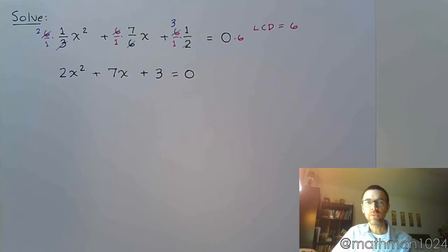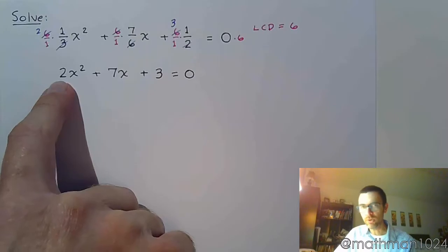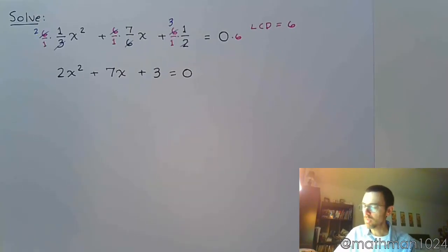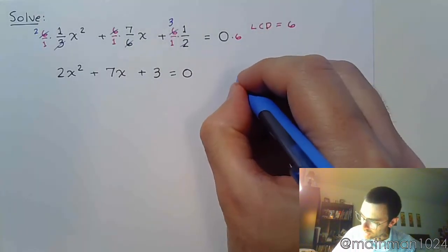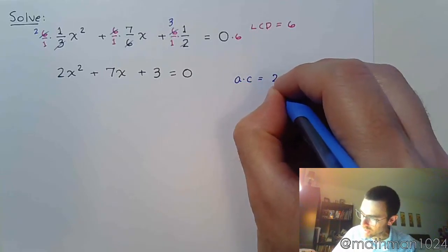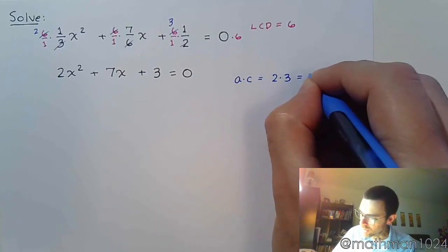And now it's just a matter of using that AC method to factor this. And we say the AC method because the lead coefficient is not 1. All right? So off to the side, let's work that out. So A times C is 2 times 3, which gives me 6.